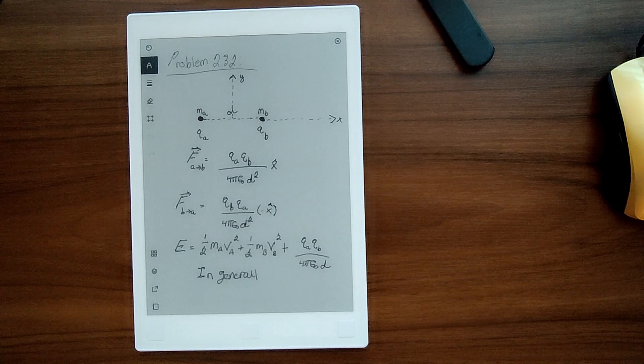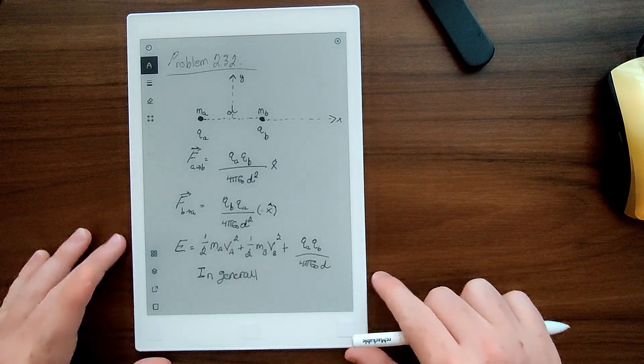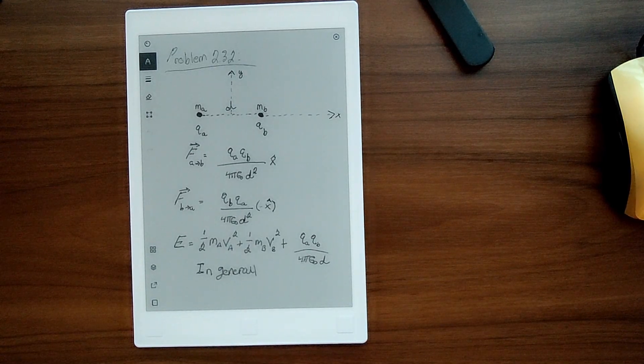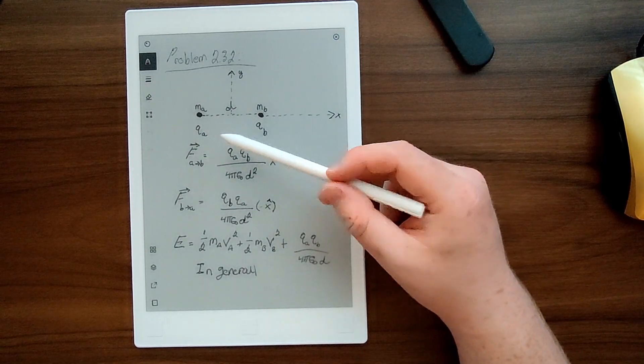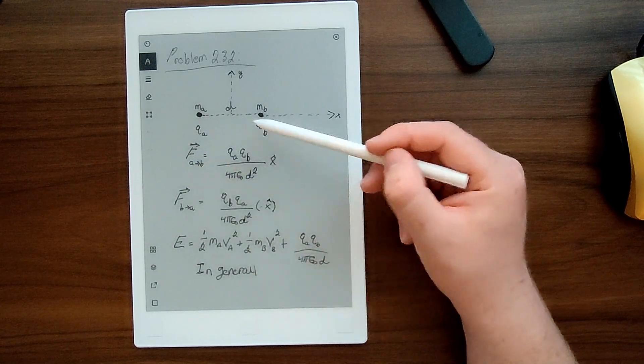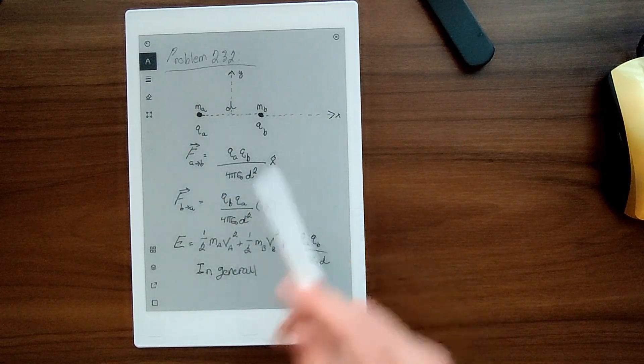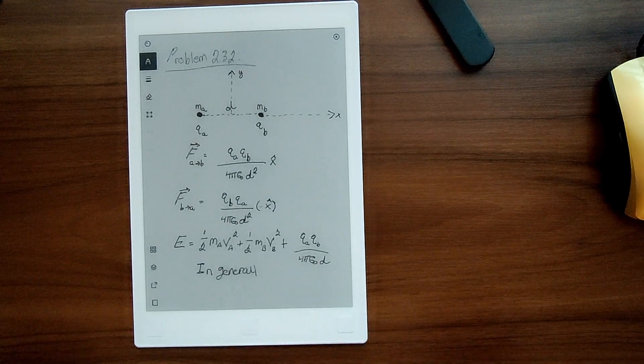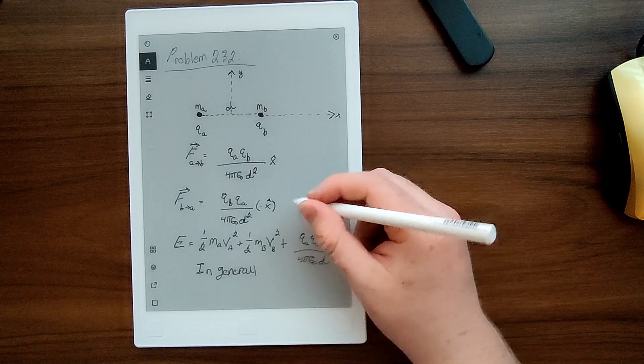We can solve this problem by analyzing the energies and the momentums of this problem. And that'll kind of give us a solution. So I kind of just wrote here initially, the force. There's a force on each one at the beginning. The force A acts on B is this. This is just the Coulomb force. And the force that B exerts on this is this. But it ended up not really being useful. But I did write it out just for clarity's sake.